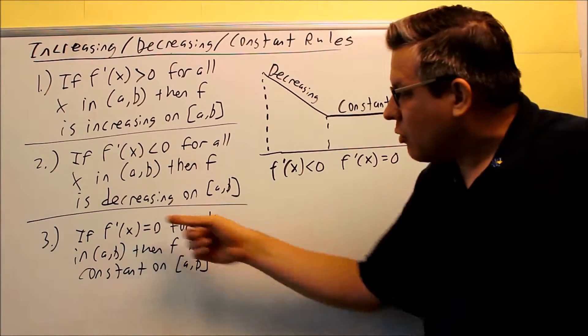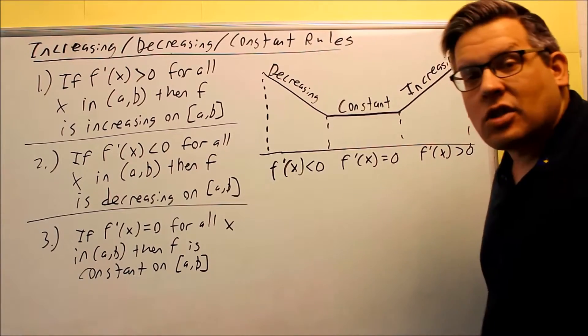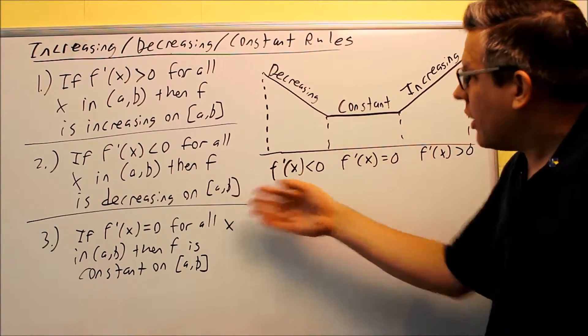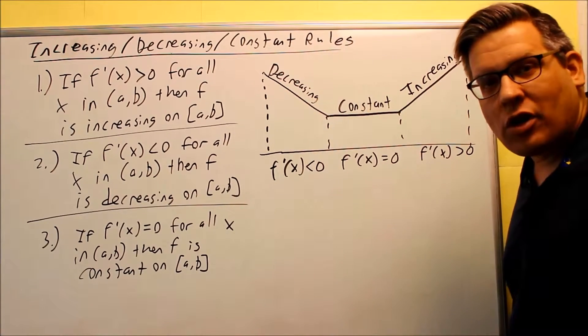and then this is the one for constant. If it's equal to zero on the interval, then we say it's going to be constant from a to b. So this is formally how you'd write that. It's basically saying exactly the same thing as the graph right here.